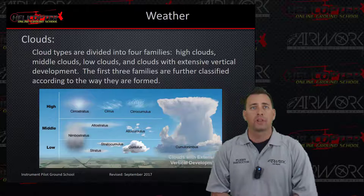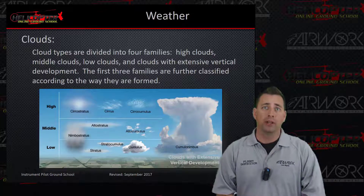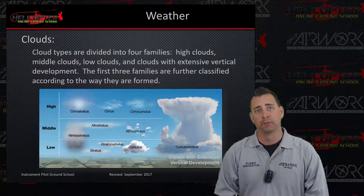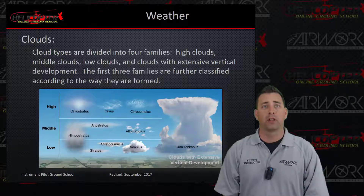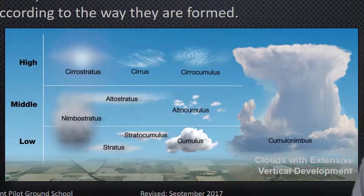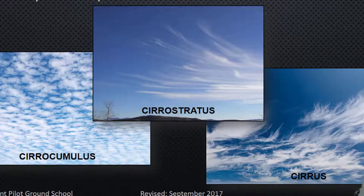Let's talk about some clouds. Cloud types are divided into four families: high clouds, middle clouds, low clouds, and clouds with extensive vertical development. The first three families are further classified according to the way they are formed. Here's a good graph showing the high, middle, and low clouds. The high cloud family is made up of cirroform and includes cirrus, cirrocumulus, and cirrostratus. They are composed almost entirely of ice crystals.